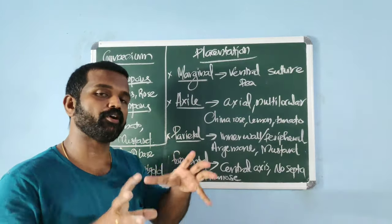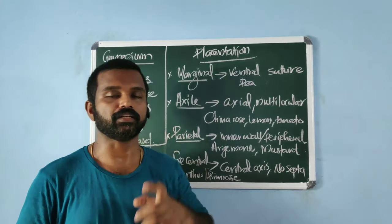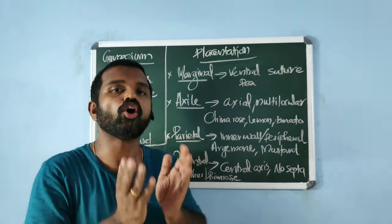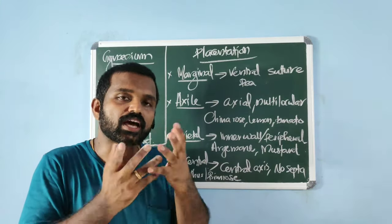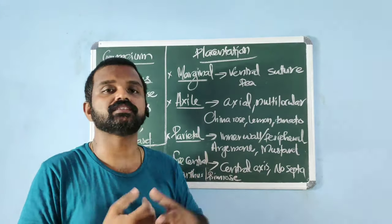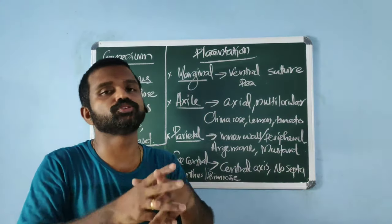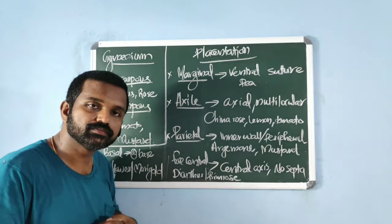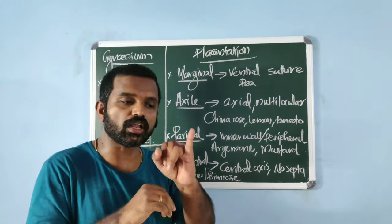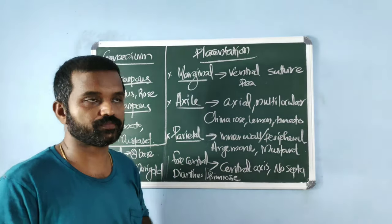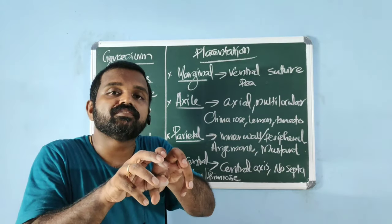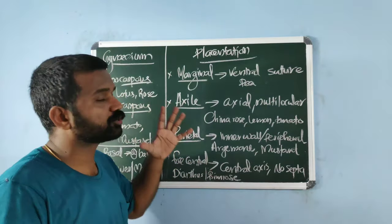Gynoecium is the female reproductive whorl, consisting of carpels. Each carpel has three parts: stigma, style, and ovary. If many carpels are fused, it is termed syncarpous — examples: tomato and mustard (Solanaceae, Liliaceae). If more than one carpel is present and they are free from each other, it is apocarpous — examples: lotus and rose. If only one carpel is present, it is monocarpellary.